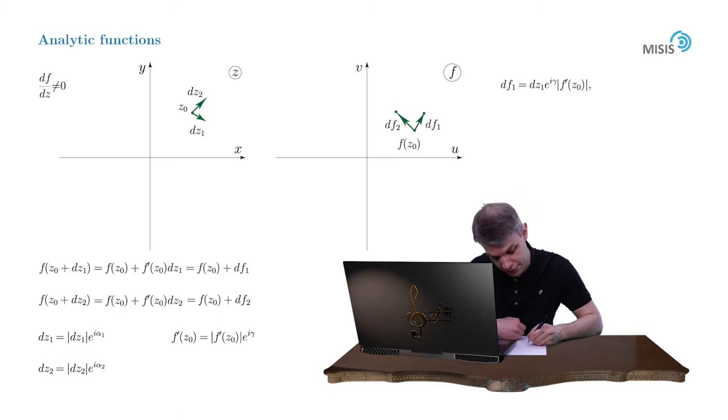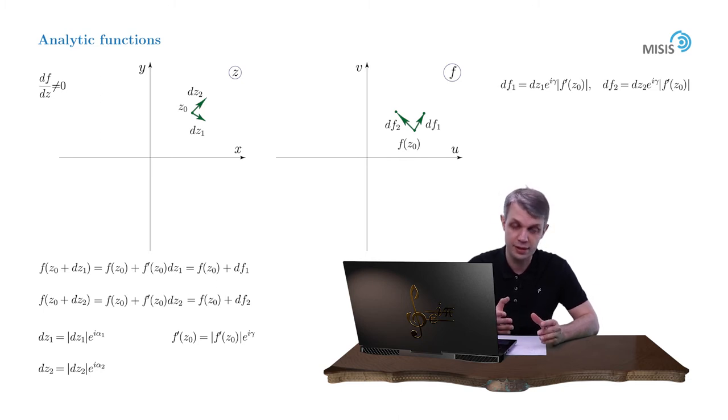And the same holds for vector df2. Now what I'd like to draw your attention to is that we see that both of our initial vectors are multiplied by the same stretching number and rotated by the same angle.